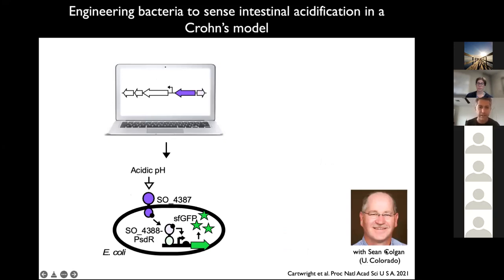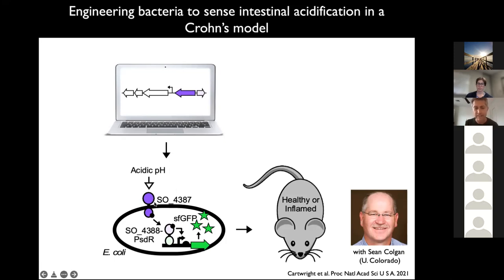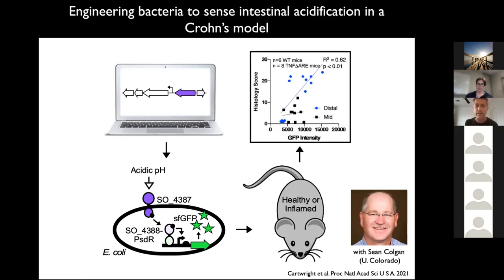Right after we published that paper, Sean Colgan at Colorado emailed saying that's exactly the system they needed. They were studying extracellular acidosis in mammalian hosts during Crohn's disease — inflammation in the intestine results in lactic acid accumulation that can drop pH to about three. We took our acidic pH sensor linked to GFP, and Sean put these bacteria in healthy and genetically inflamed mice. We saw that the more inflamed the mice were, the more acidified their intestinal lumen was, and the more our reporter E. coli turned on — a nice second example of an engineered diagnostic gut bacterium.